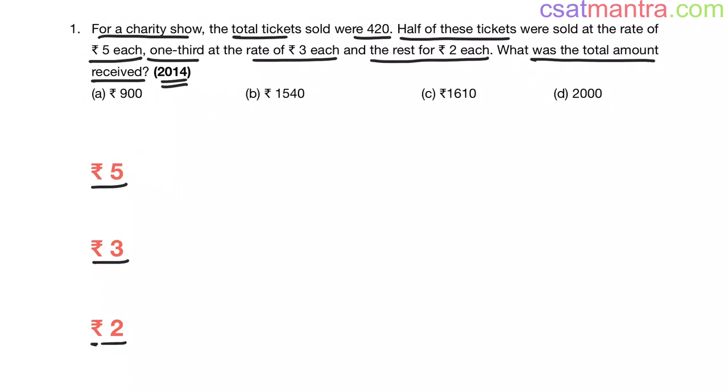Total number of tickets were 420. Now 5 rupees tickets were half of total number of tickets, half of 420, that is equal to 210. Now amount collected by 5 rupees tickets: 5 rupees into number of tickets, this is equal to 1050.